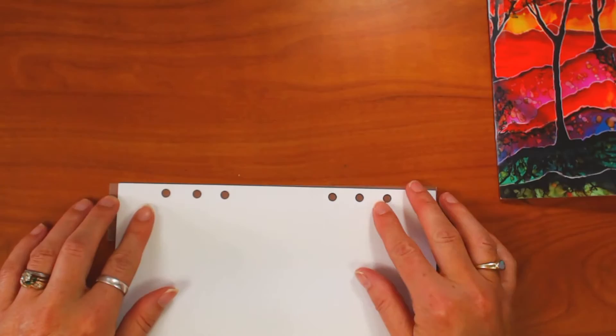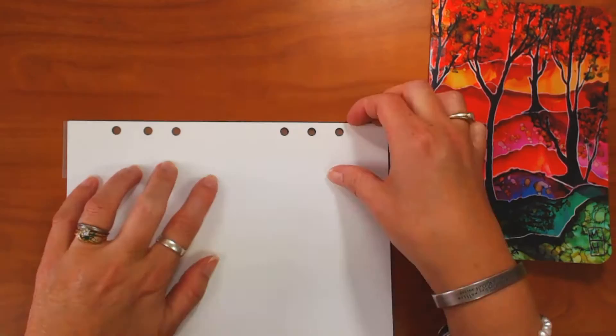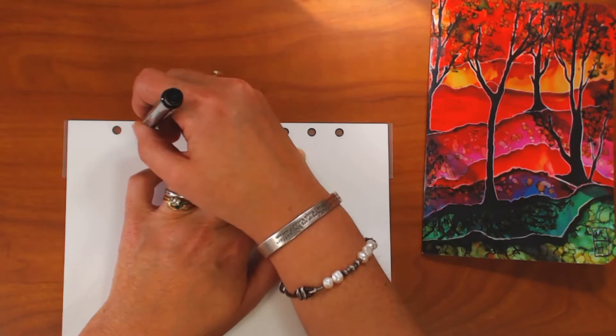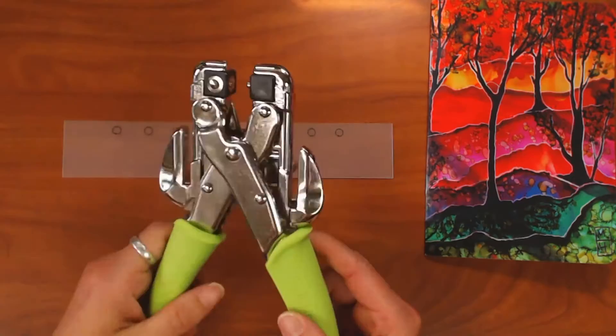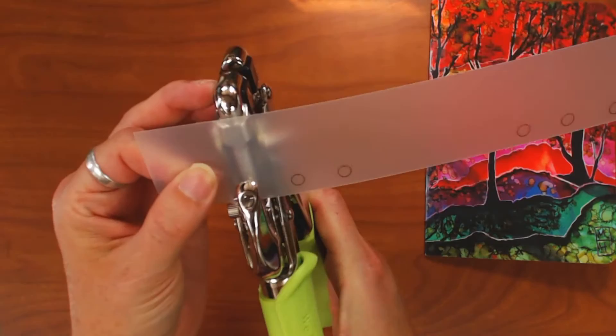In this example, I'm going to make an adapter for this little notebook that's not a full size notebook, so it's kind of an odd size. And that's the nice thing about this is that you can make them for any size that you need. So the first thing I do is I just take a divider out of my planner. I center it on the plastic and I just simply trace the holes in there.